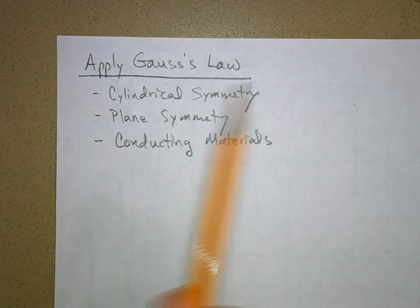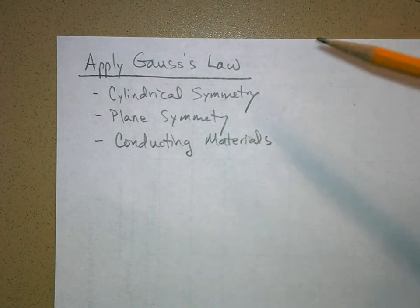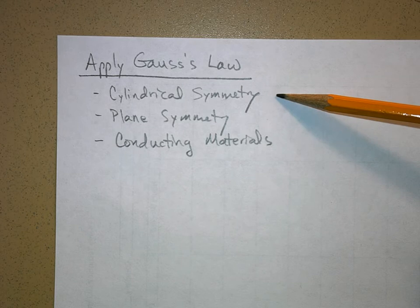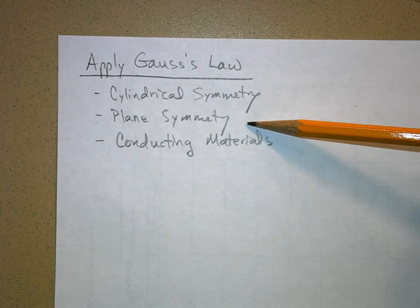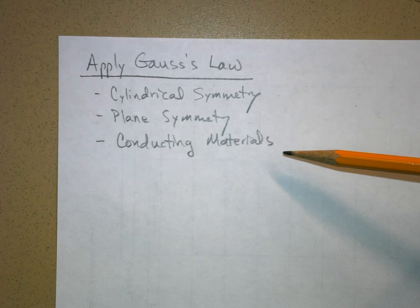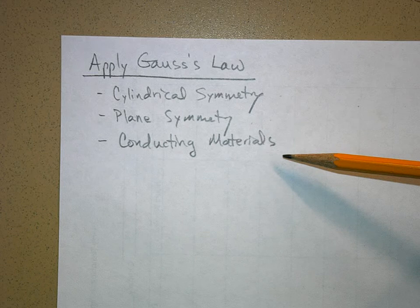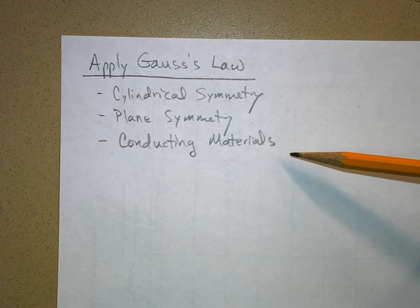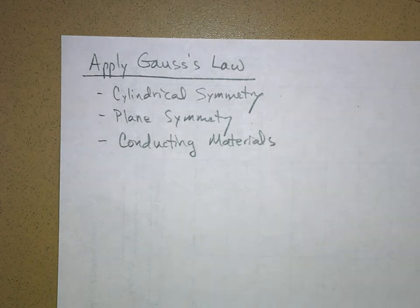We're going to finish what we started - we're talking about applying Gauss's law to certain situations. Today we're going to talk about applying it to cylindrical symmetry, which we started, then plane symmetry, and then we're going to apply Gauss's law to an electrical charge deposited on a conducting material - the electric field in a conductor and how to find the field just off the surface.